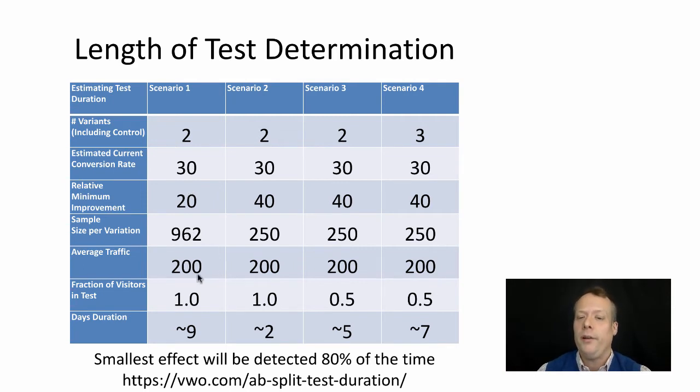If we have 200 customers per day, we can assign 100 customers to each website variation per day if we're using all visitors in the test. This means it'll take about nine and a half days to get an estimate of whether one is better than the other. But you don't have to do all this math - I'm using an A/B split test duration calculator on the VWO website.